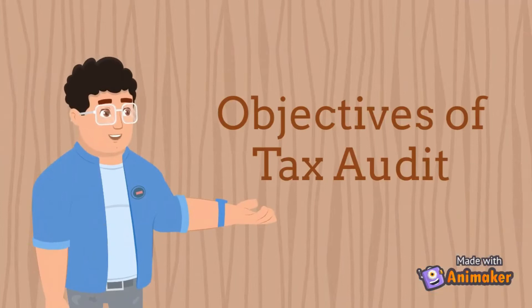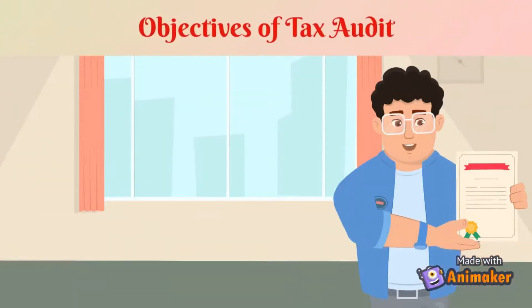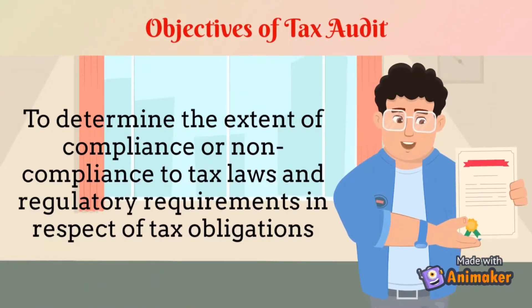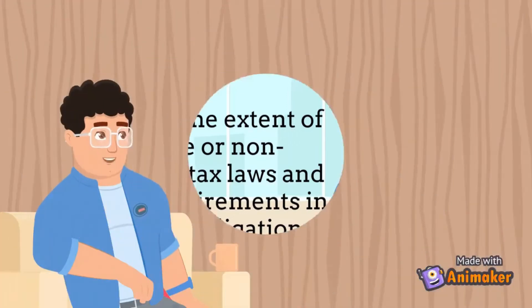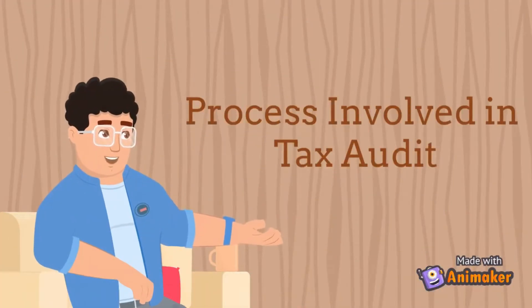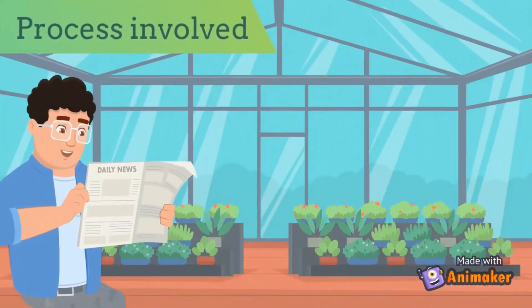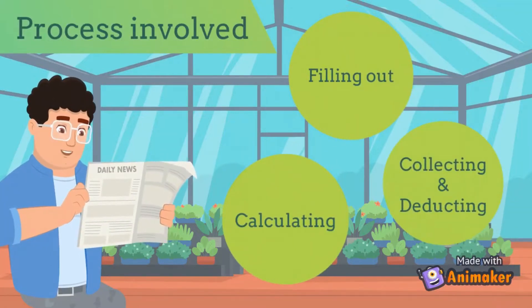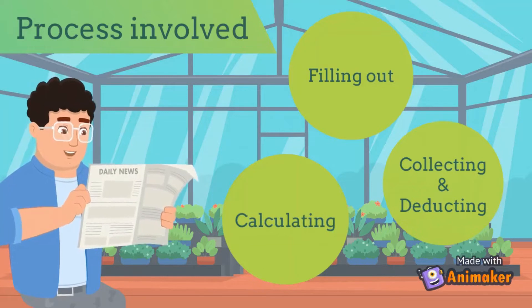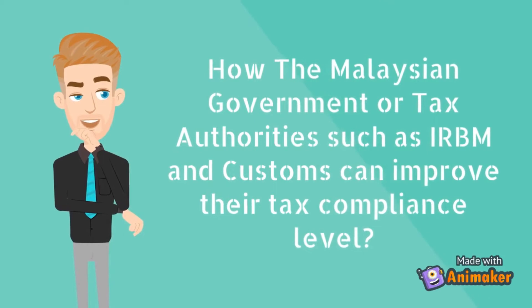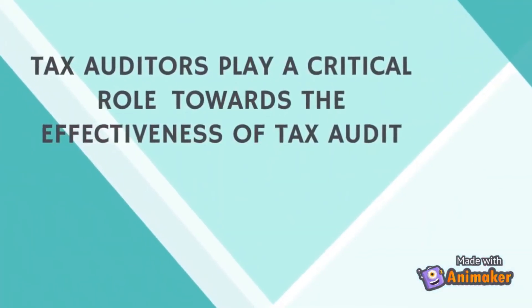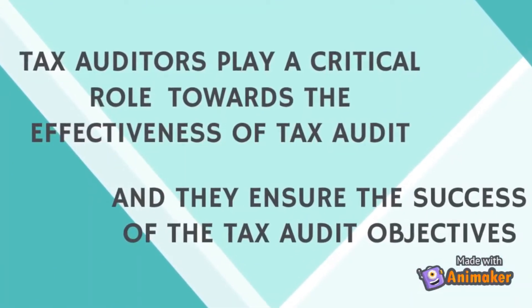Moving on to the objectives of tax audit: the objective is to determine the extent of compliance or non-compliance with tax laws and regulatory requirements in respect of tax obligations. The process involved in tax audit includes filling out, calculating, collecting, and deducting all taxes that comply with applicable laws and regulations, conducted by the relevant tax authorities. Tax auditors play a critical role in the effectiveness of tax audit and ensure the success of the audit objectives.